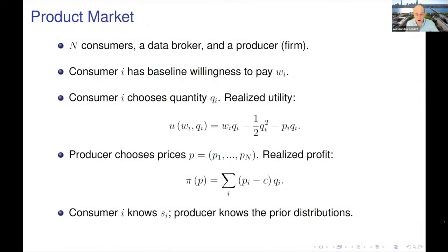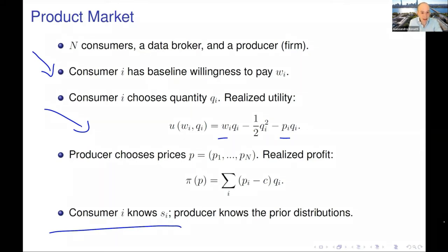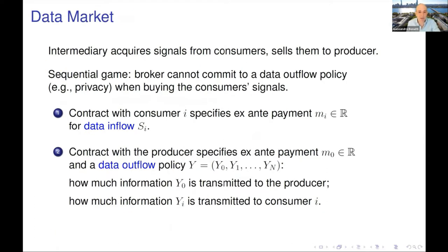w_i is each consumer's baseline willingness to pay — the intercept of their demand function in a linear world, if they actually knew their type. Realized utility is quadratic, so w_i minus p would be their demand function if they knew their type. The producer chooses linear prices — a restriction in principle — but they need information to personalize, because at the onset each consumer only knows their signal and the producer only knows the joint prior distribution of values and signals. Both consumers and the producer can benefit from augmenting their data by interacting with the information broker.